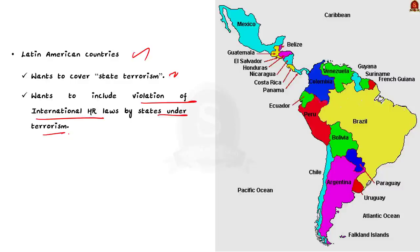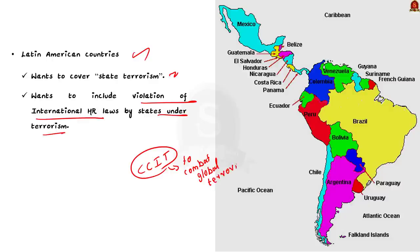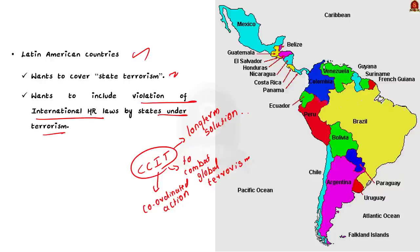The OIC wants exclusion of national liberation movements, mainly in the context of the Israel-Palestine conflict — arguing there is a need to distinguish acts of terrorism from movements of self-determination so that legitimate movements are not labeled as criminal acts of terrorism. Latin American countries wanted the draft to cover state terrorism and violations of international human rights law by states. The main concern of all three groups is the definition of terrorism. Mr. M.K. Narayanan is of the opinion that CCIT should be brought back to the table, the definition issues sorted out, and CCIT implemented to enable coordinated worldwide action against terrorism as a long-term solution.